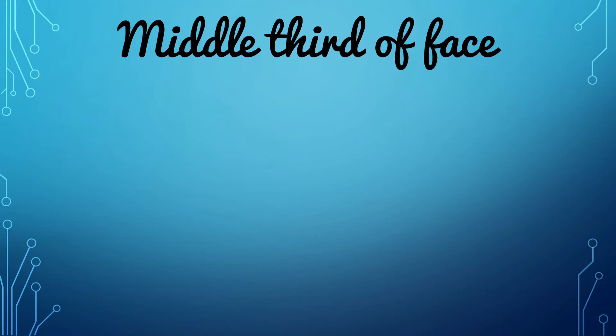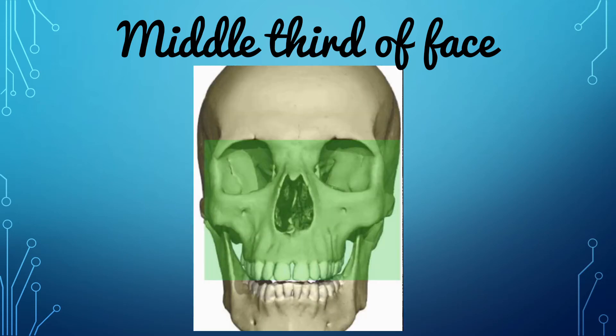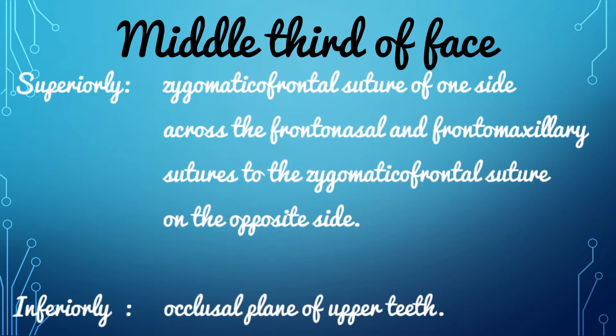The middle third of the facial skeleton is defined as an area which is bounded superiorly by a line drawn across the skull from the zygomaticofrontal suture of one side, across the frontonasal and frontomaxillary sutures, to the zygomaticofrontal suture on the opposite side, and bounded inferiorly by the occlusal plane of the upper teeth, or if the patient is edentulous, by the upper alveolar ridge.